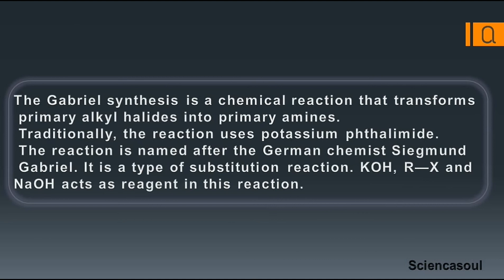Gabriel Synthesis is a reaction that transforms primary alkyl halides into primary amines. Traditionally, the reaction uses potassium phthalimide. The reaction is named after the German chemist Siegmund Gabriel. It is a type of substitution reaction. KOH, RX, and NaOH act as reagents in this reaction.